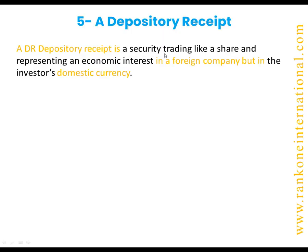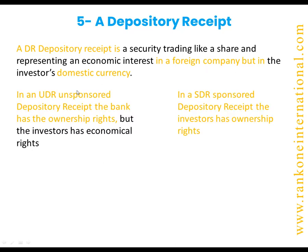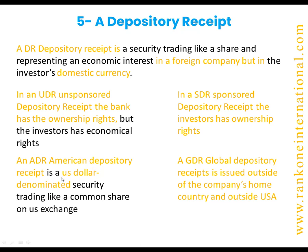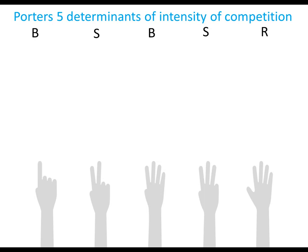Five: a depository receipt (DR) is a foreign company's share traded in the domestic currency. An unsponsored depository receipt: the bank has the ownership rights. A sponsored depository receipt (SDR): the investor has ownership rights. An American Depository Receipt (ADR) is a US dollar-denominated security. A Global Depository Receipt (GDR) is issued outside of the company's home country and also outside the USA.